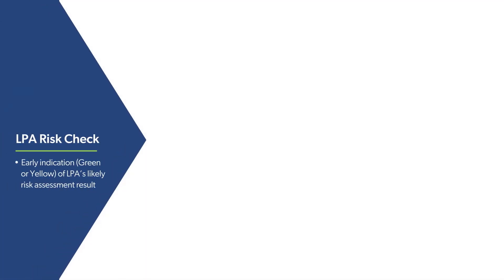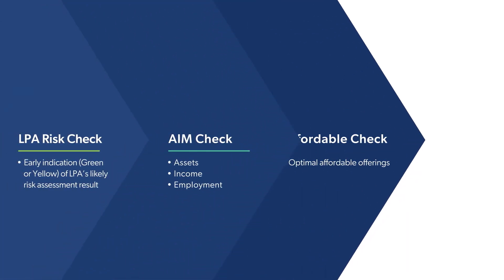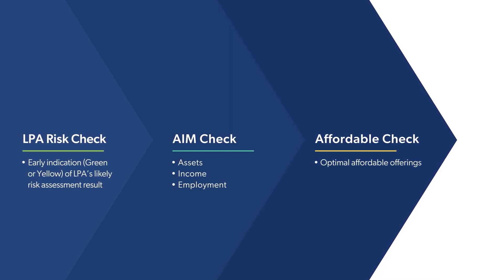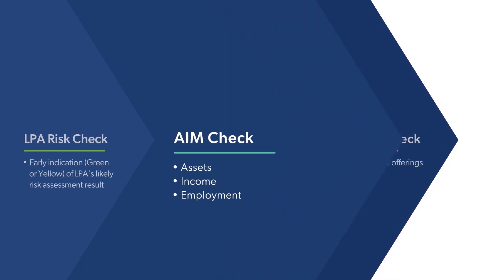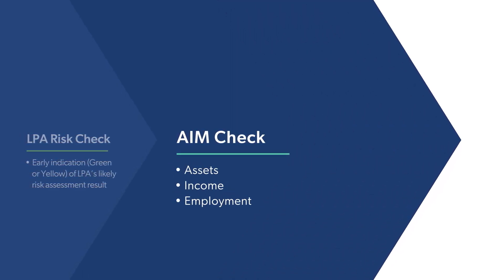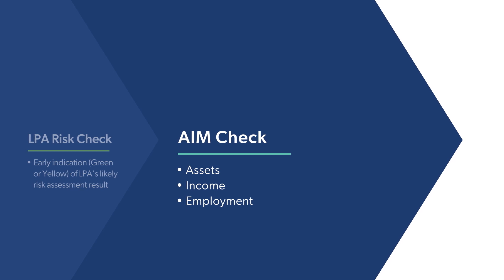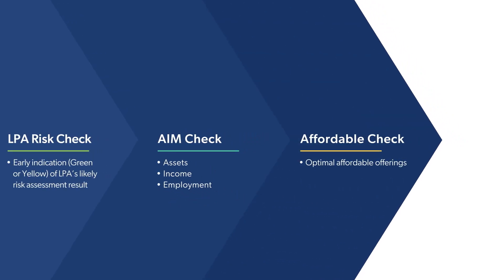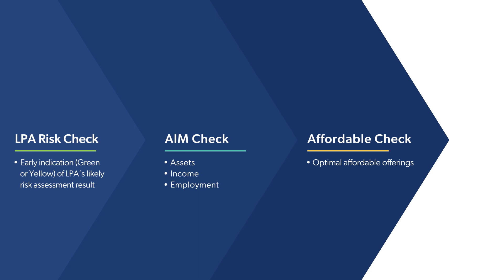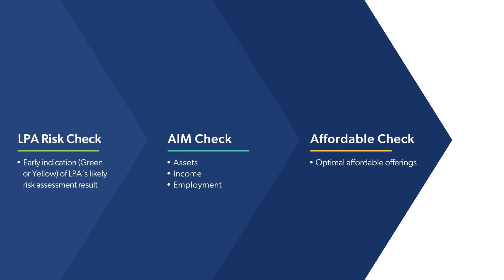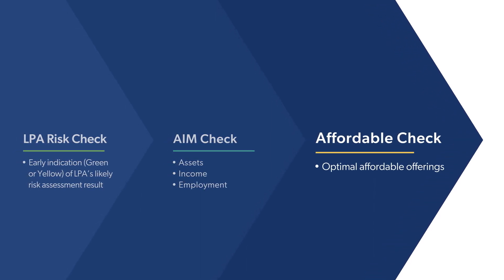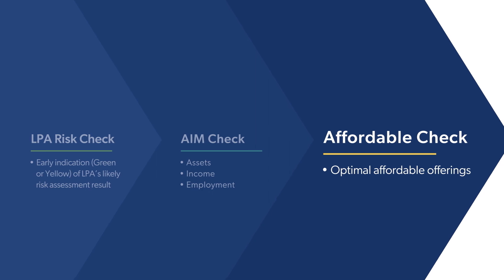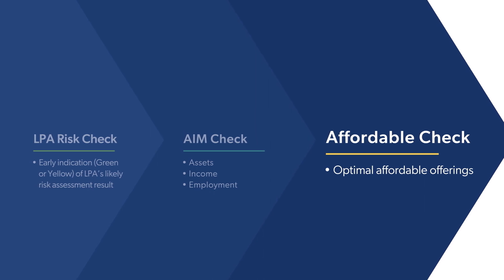Lastly, LPA Risk Check can be easily integrated with other origination APIs. For example, AIM Check may be used first to obtain verified borrower asset and income amounts, which could then be submitted to Risk Check. Or, based on Risk Check's Affordable Loan Eligibility Indication, Affordable Check could be used to obtain a more comprehensive Affordable Loan Assessment.